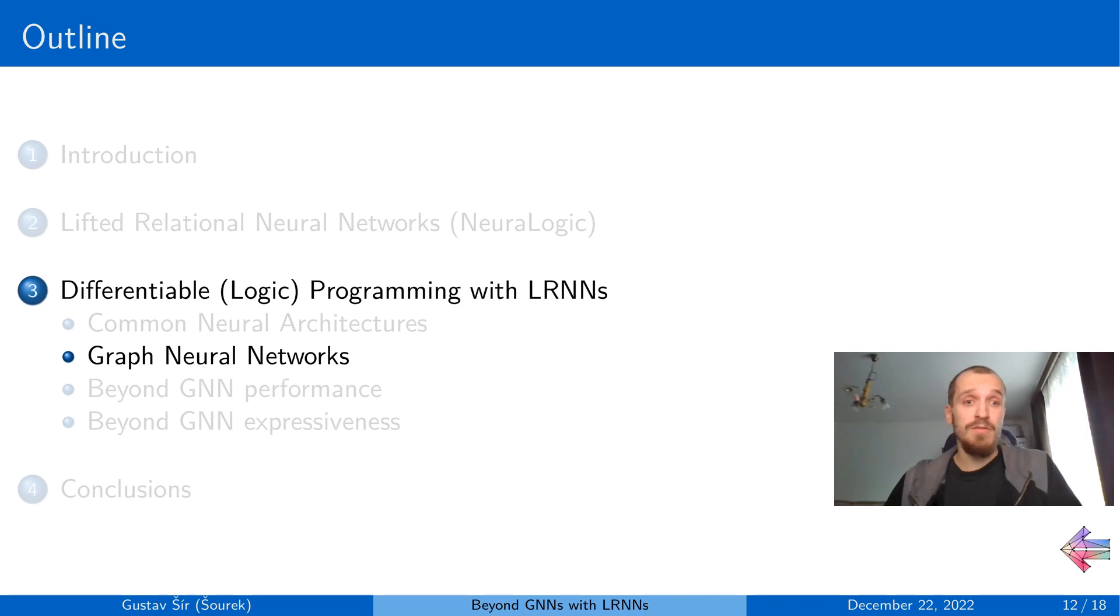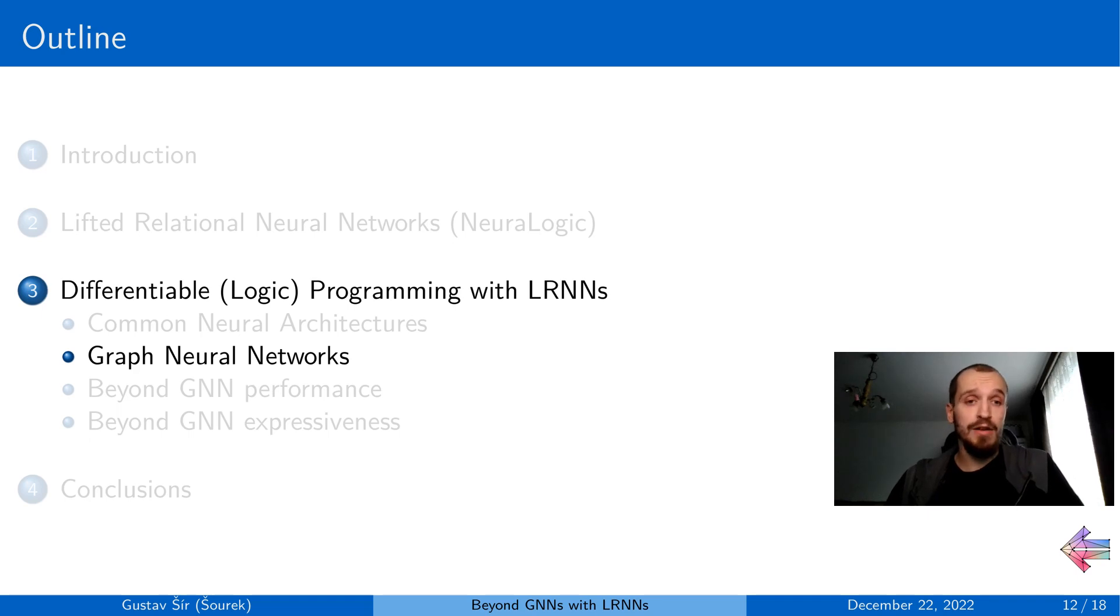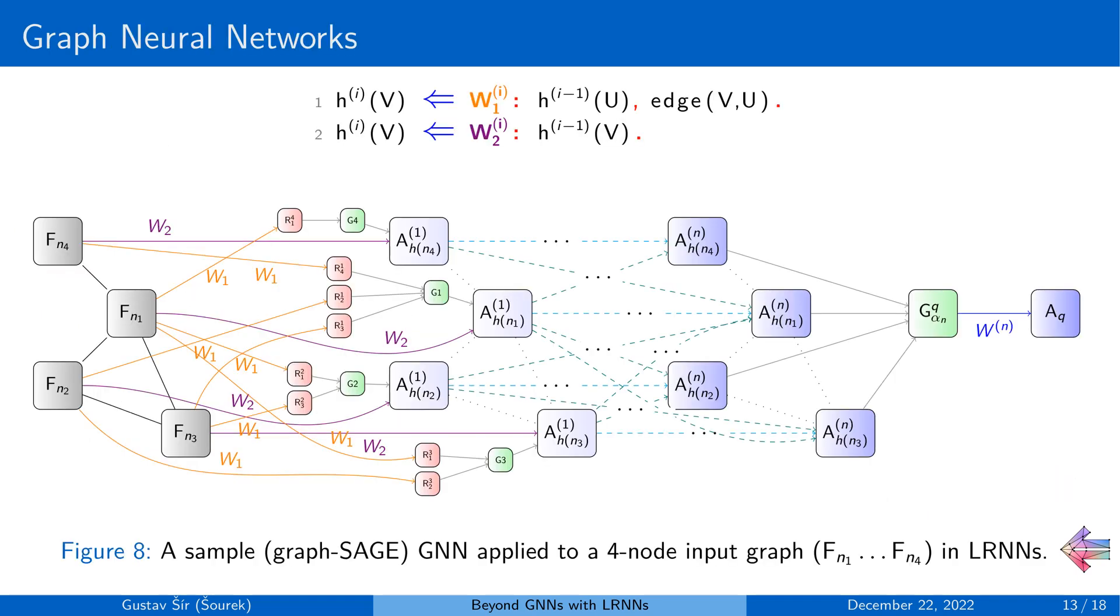And this correspondence becomes even more natural for the graph neural networks, which have recently become extremely popular in deep learning for graph structured data. So in logical terms, the idea behind graph neural networks is that the hidden representation of some node V in the layer I is determined by some parameterized transformation of some other node U, such that there is an edge between V and U. And further, in some more advanced GNN models, you might also want to combine this with the representation of the same node V from the previous layer.